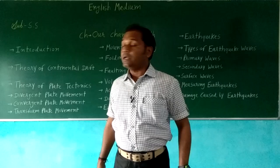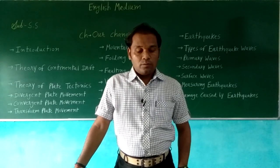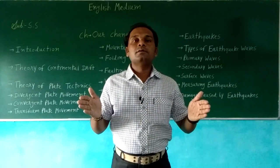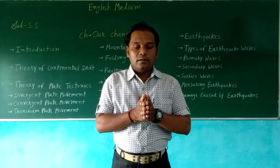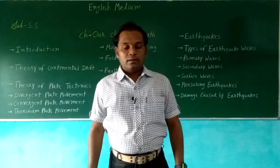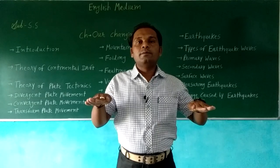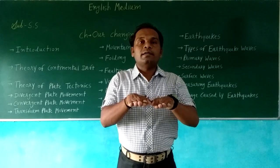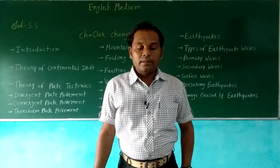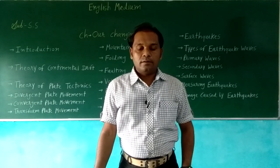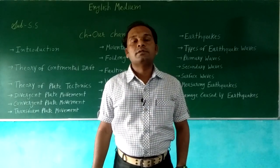Convergent plate movement happens when two plates move towards each other and collide. Due to this movement, one tectonic plate moves under another. When two plates collide, one plate goes under the other, and it forms mountains. The formation of mountains happens because of these two plates moving towards each other.